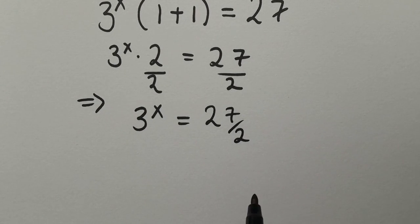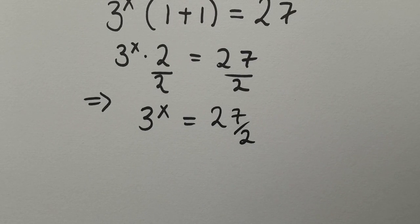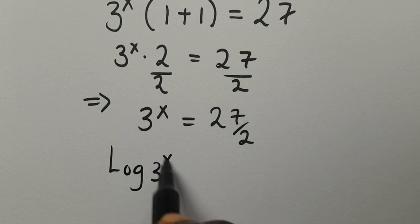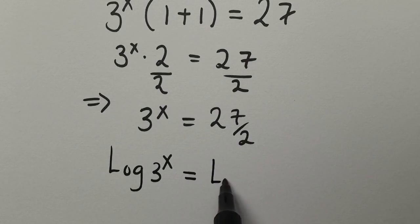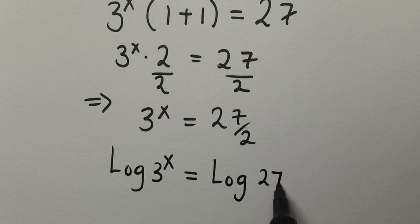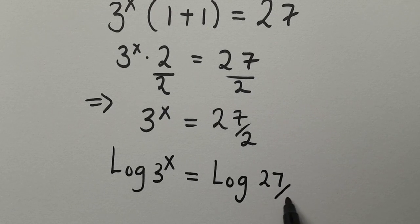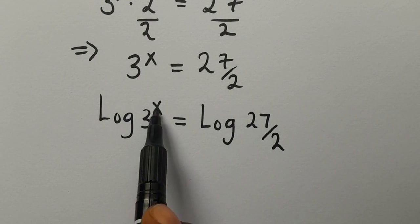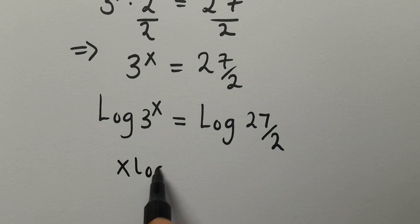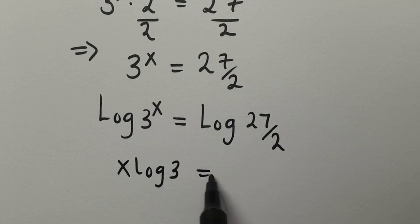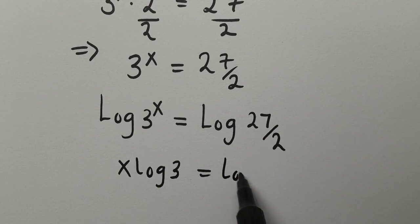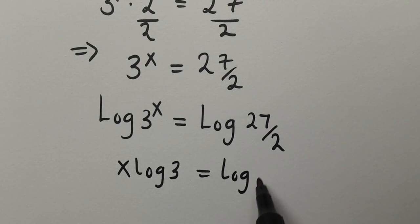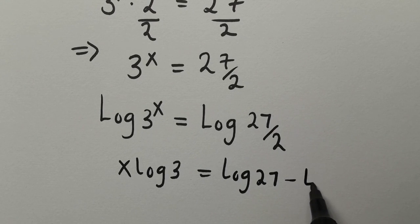We introduce logarithm to both sides. We have log of 3 to the power of x equals log of 27 divided by 2. Using the power rule, x comes down to give x log 3 equals log 27 minus log 2, since division changes to subtraction.